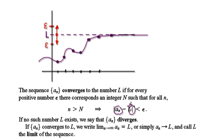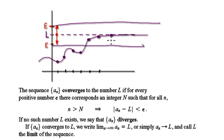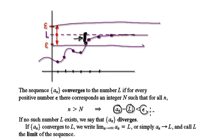You can interpret this as: if you get the sequence, take away the true limit, so that's this magnitude here, that's this distance here — this distance must be less than the tolerance that you've given me. So the tolerance here is this epsilon.